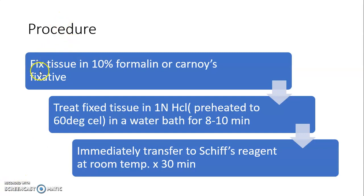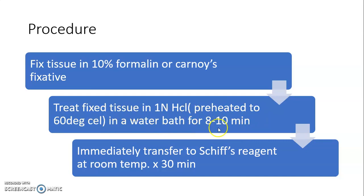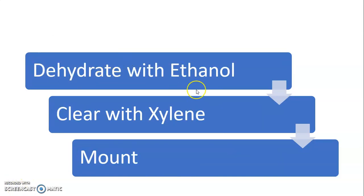Feulgen stain will stain the DNA red to purple color and give the cytoplasm a green color. The procedure of Feulgen technique: fix the tissue in 10% formalin or Carnoy's fixative. Treat the fixed tissue in 1N HCl preheated to 60°C in a water bath for 8 to 10 minutes. Then immediately transfer it to Schiff's reagent for 30 minutes at room temperature. Then dehydrate with ethanol, clear with xylene, and mount the slide with DPX.